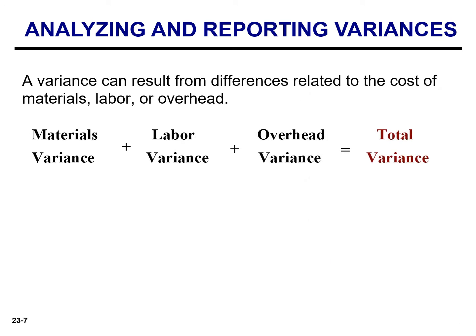To interpret a variance, we must analyze its components. A variance can result from differences related to the cost of materials, labor, or overhead. The total variance is the sum of the materials, labor, and overhead variances.